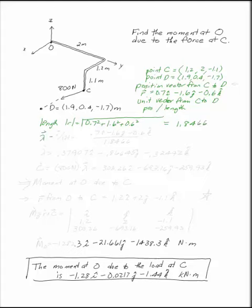Now we can find the unit vector, which is the position vector divided by its own length, which is 0.7i minus 1.6j minus 0.6k divided by 1.8466.